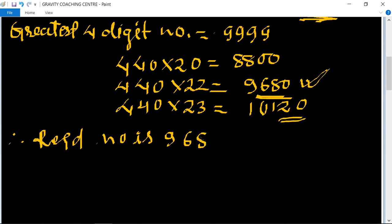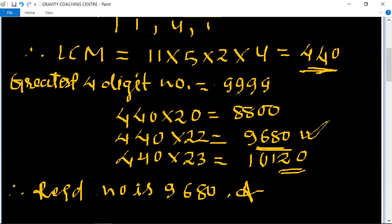We also find by another method. So the largest four digit number 9999 is divided by 440.